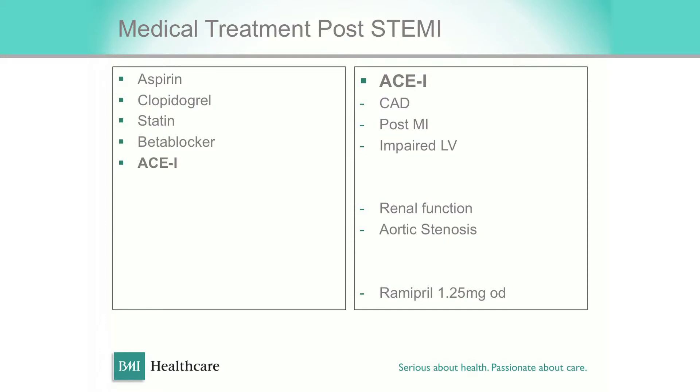ACE inhibitors have many indications. There is concern about renal function — once the GFR falls below 50 mL/min, and certainly below 30 mL/min, you need to be very cautious in elderly patients. But if the GFR is over 50 I would want to introduce an ACE inhibitor, even in the context of aortic stenosis with impaired LV function, as long as there is no critical aortic stenosis. You don't need to start at ramipril 5mg or lisinopril 20mg — you can start as low as ramipril 1.25mg and titrate up from there.